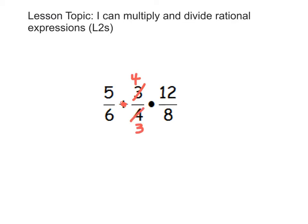Now what we have is 5/6 times 4/3 times 12/8. Notice we do not flip this fraction, because the sign in front of it is multiplication. We only flip the fraction and take the reciprocal of the one that comes directly after the division sign.